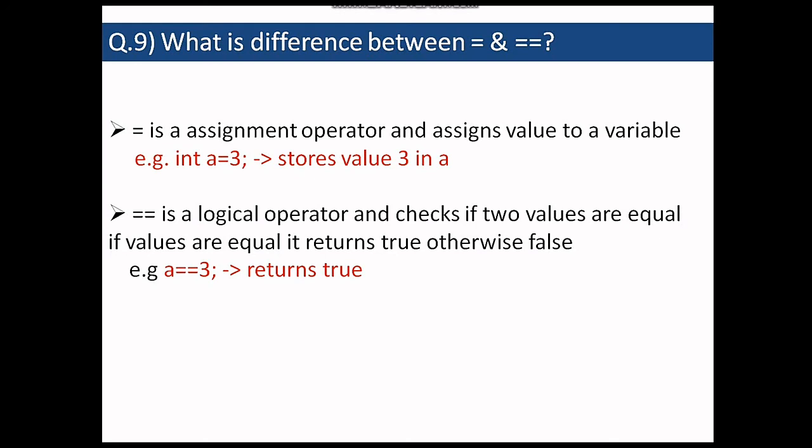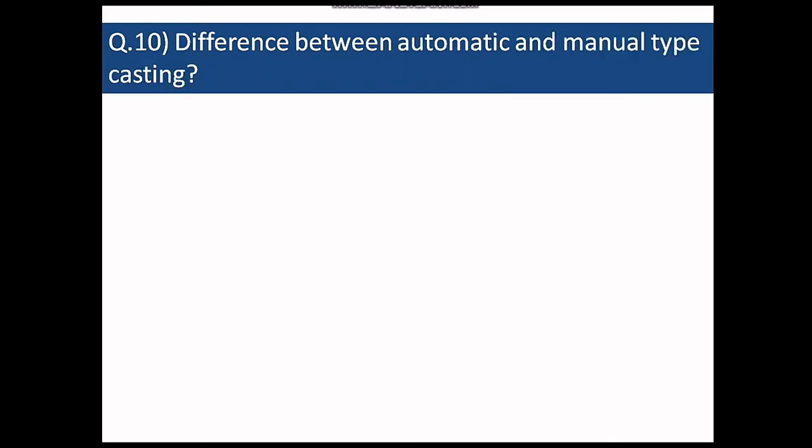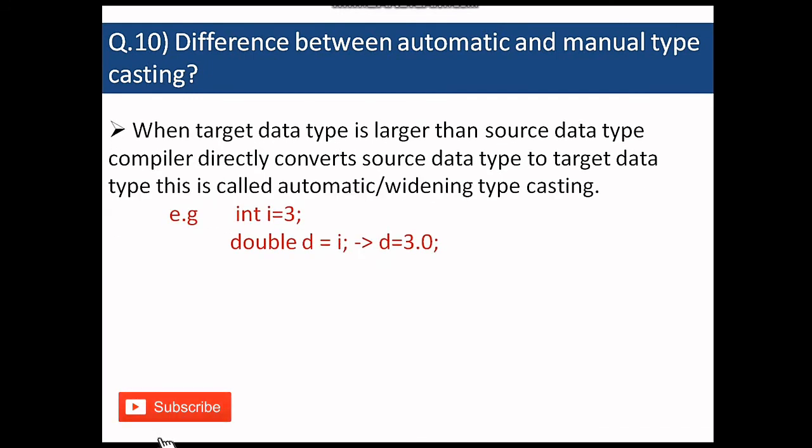And our last question is what is the difference between automatic and manual type casting. So automatic type casting is done directly by the compiler when the target data type is larger than the source data type. So here in the example we want to convert from int to double. So int is a smaller data type and double is a larger data type. So in this case we don't need to do anything but just assign the value of int to double and the compiler converts it automatically and the d has value 3.0 in the double format.